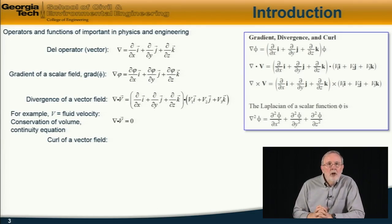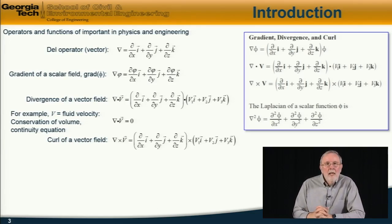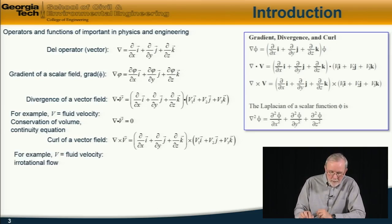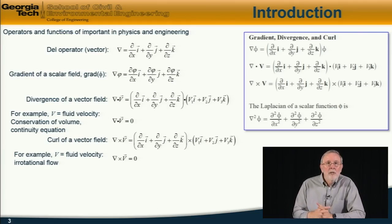The next property is the curl of a vector field. And the curl of a vector field is defined as the cross product between the del operator and the vector field. And cross product, therefore, this is a vector quantity itself, as defined here. And again, an example from fluid mechanics, if the vector field v is the fluid velocity, then a field which has the curl of the velocity field equal to zero is called an irrotational flow, and it has particular properties.